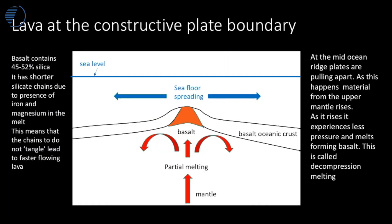So how is magma formed? Firstly, we have convection currents in the mantle which drive the plates apart. As the flow rises we get partial melting, and this occurs because closer to the surface there's less pressure, and less pressure leads to melting. The source material here in the mantle for the basalt melt is very rich in iron and magnesium.